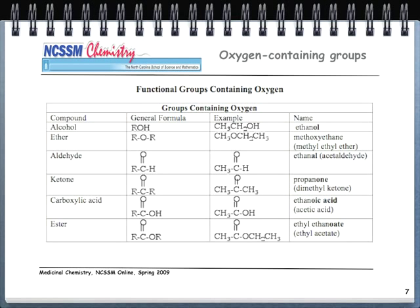Carboxylic acids have a COOH structure — a C double-bonded O with an OH. For an example with two carbons — ethane — take the '-e' off and add '-oic acid,' giving ethanoic acid, which has the common name acetic acid, otherwise known as vinegar. An ester is our last oxygen-containing functional group, with a C double-bond OR group. Find the longest chain containing the carbonyl — starting from the carbonyl carbon — then look at the group attached to the oxygen bridge. For example: ethyl ethanoate, also known by the common name ethyl acetate.